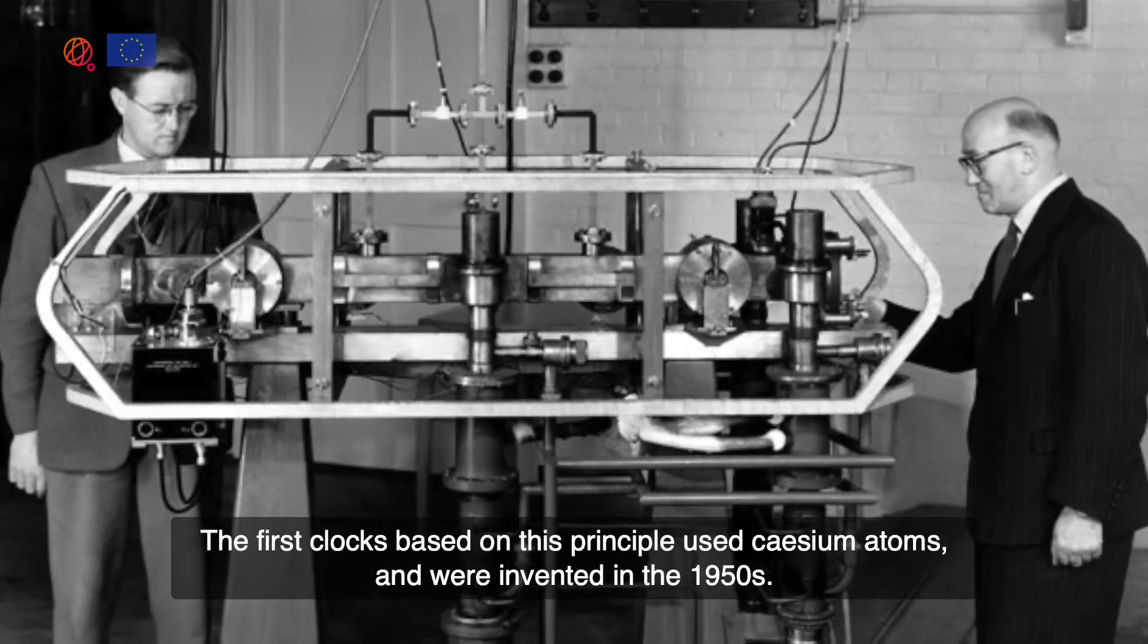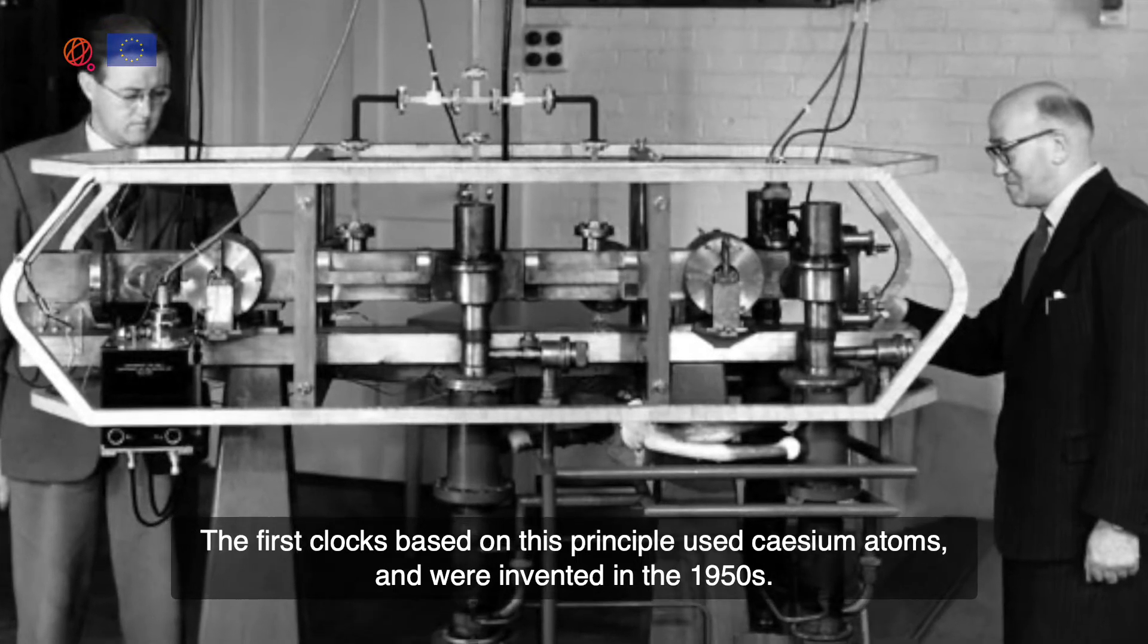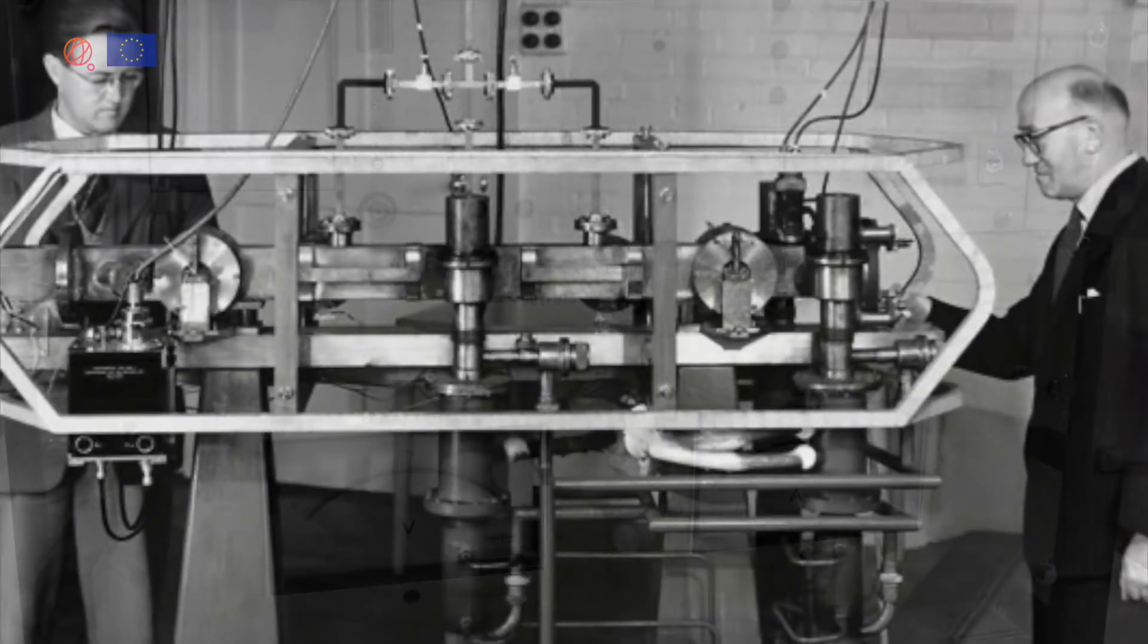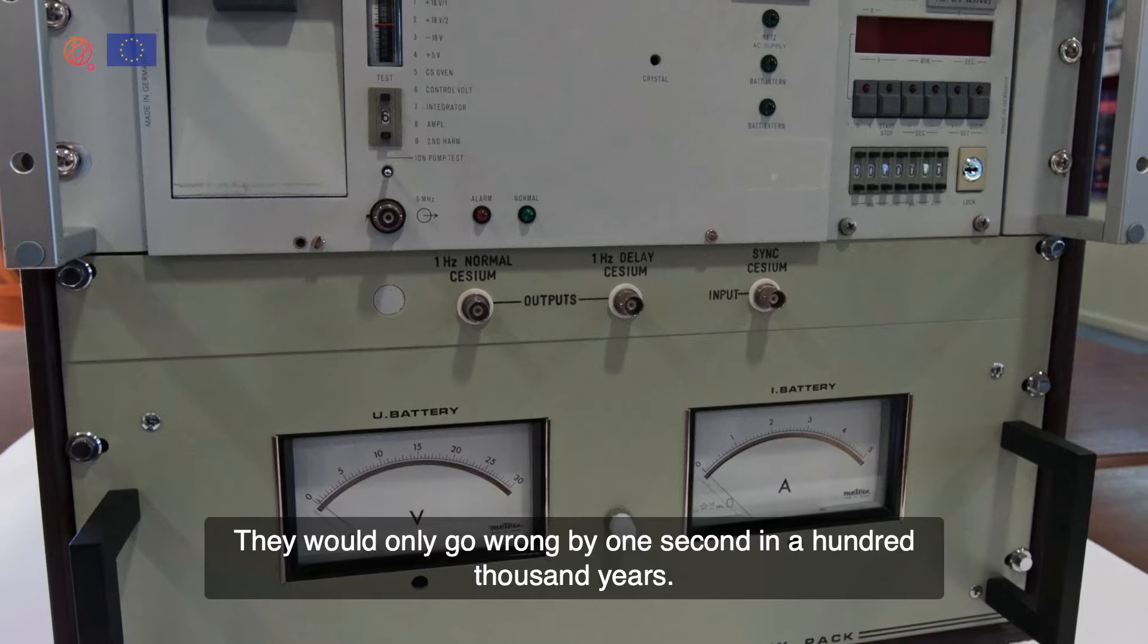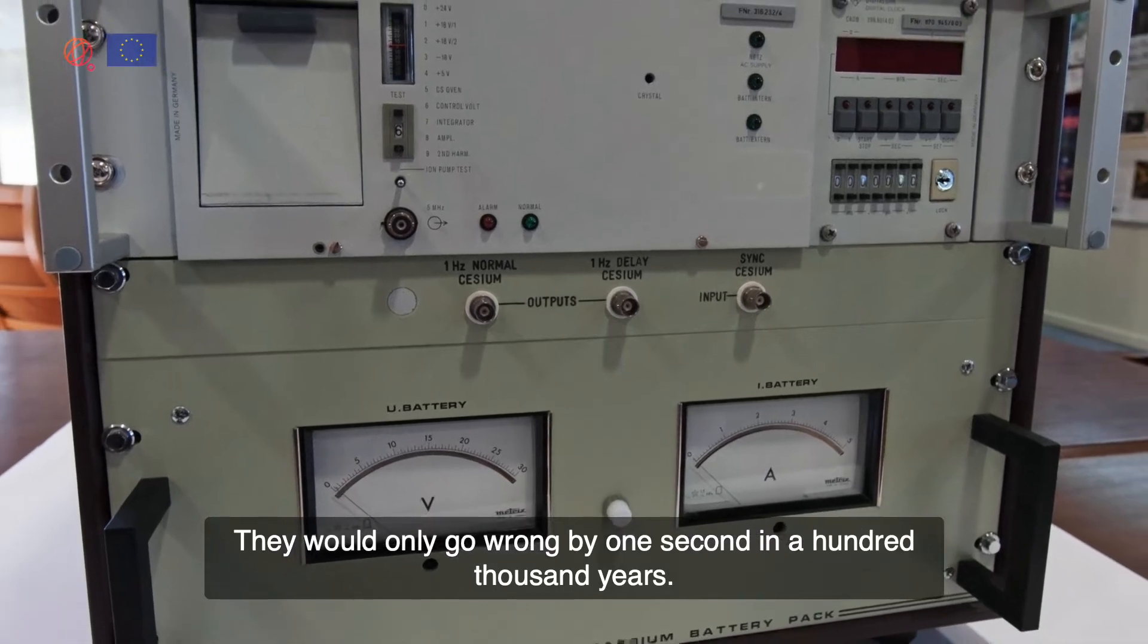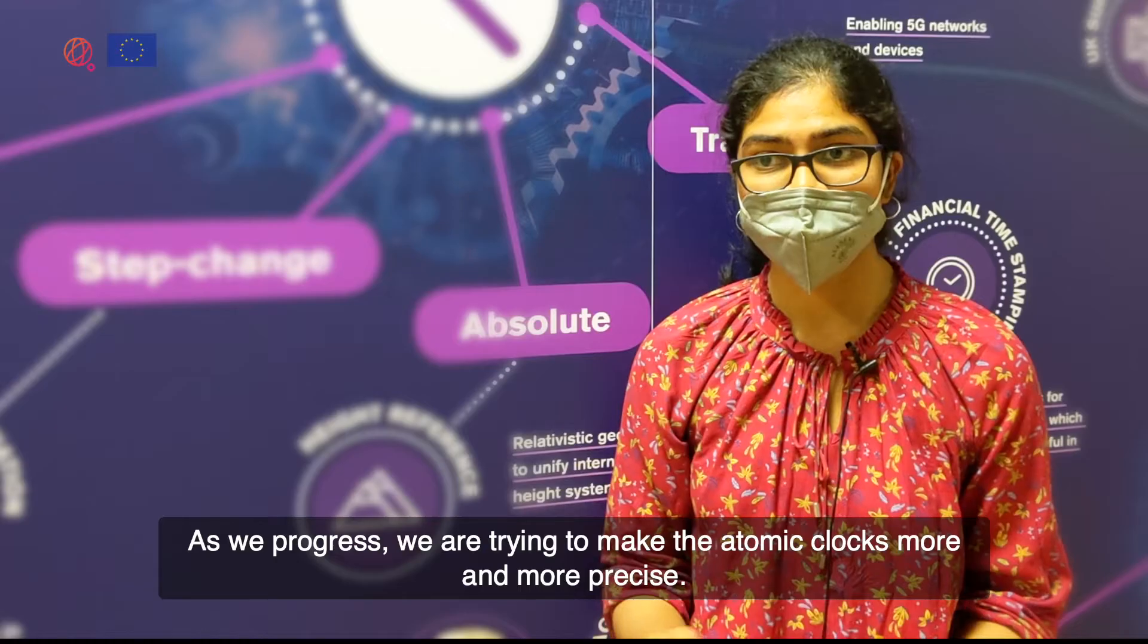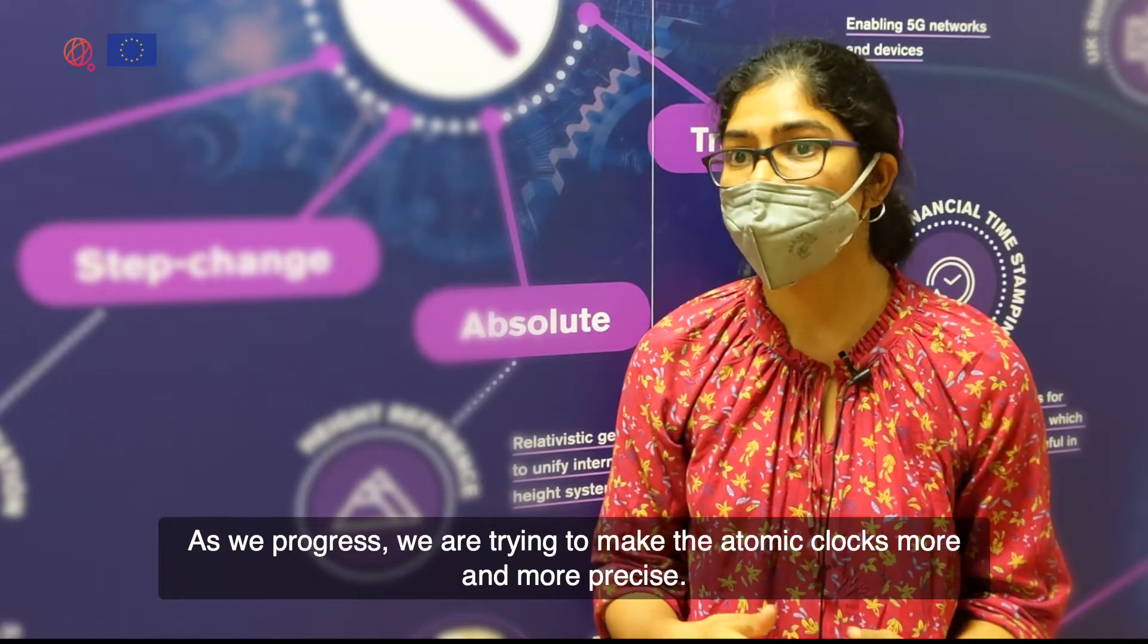The first clocks based on this principle used caesium atoms and were invented in the 1950s. They would only go wrong by one second in a hundred thousand years. As we progress, we are trying to make the atomic clocks more and more precise.